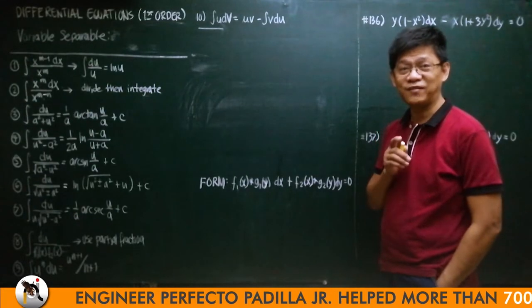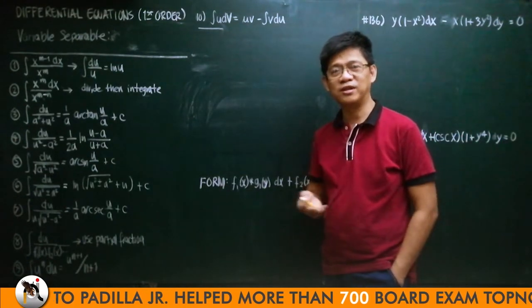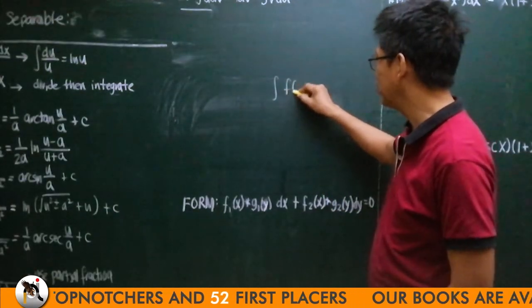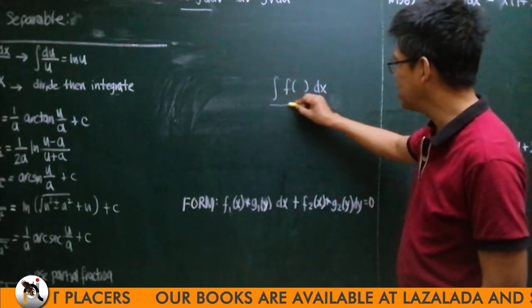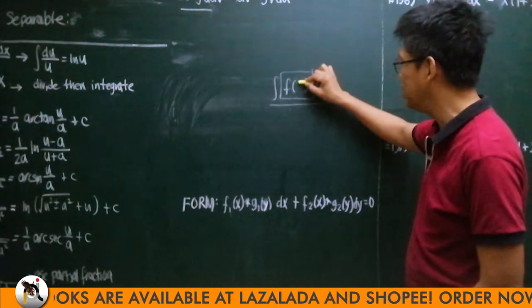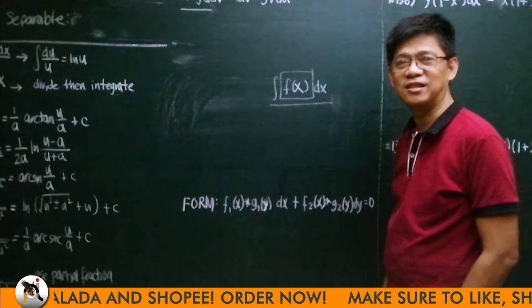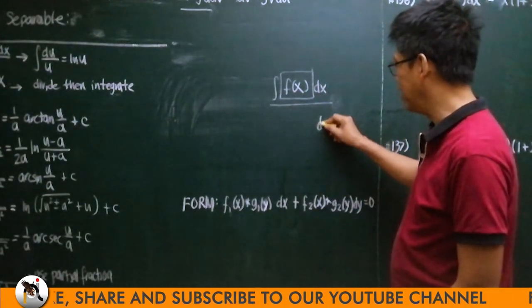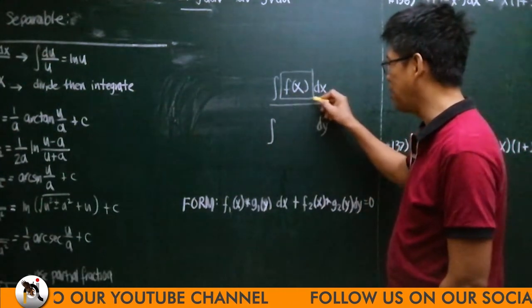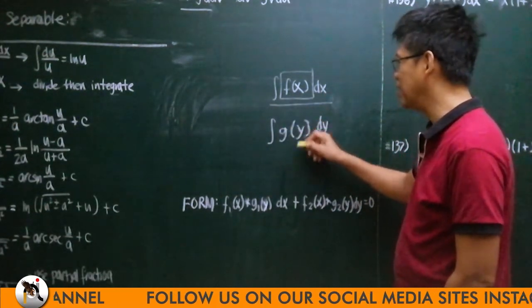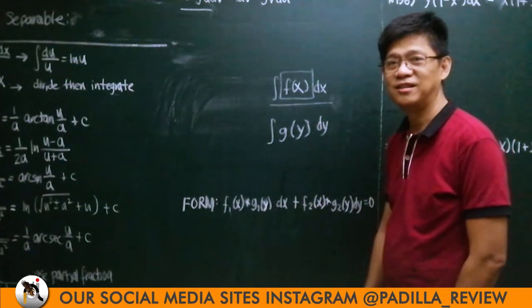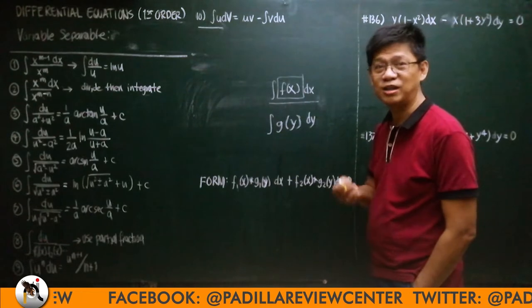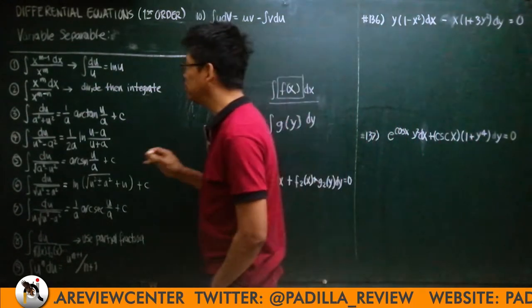Let us start solving differential equations. As we learned in integral calculus, before you can integrate an expression in dx, all functions must be in terms of x. You cannot integrate if there are two or more variables, except by partial integration. Similarly, for dy, the function must be purely in terms of y. The first form of solvable differential equation is the variable separable type.